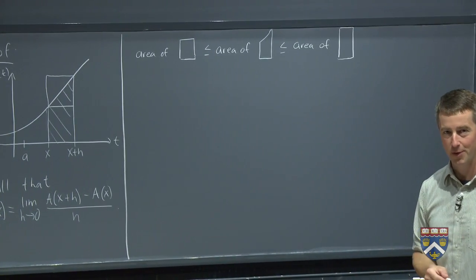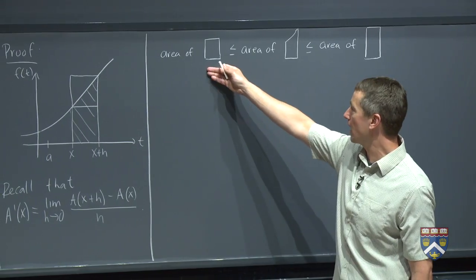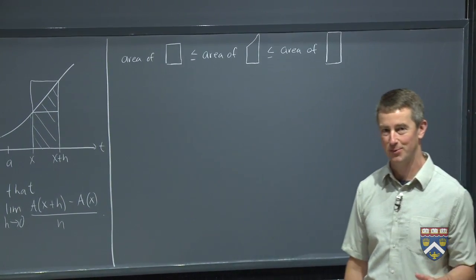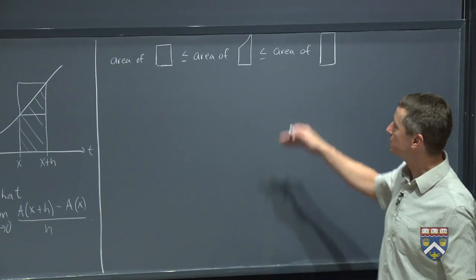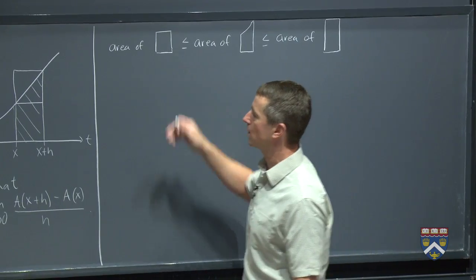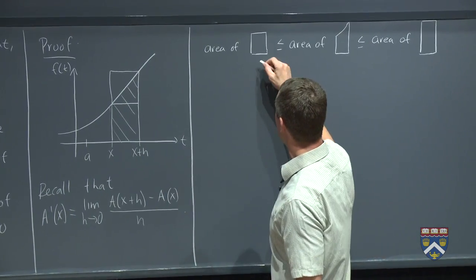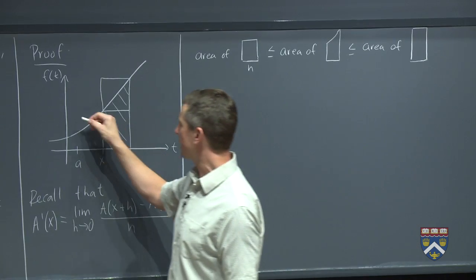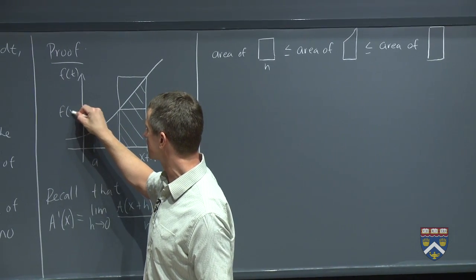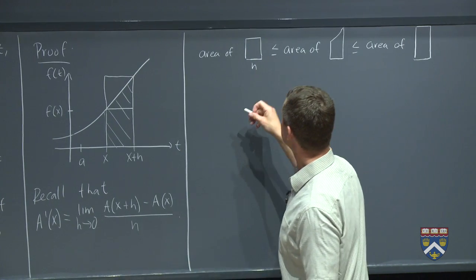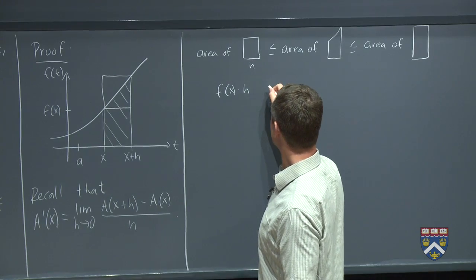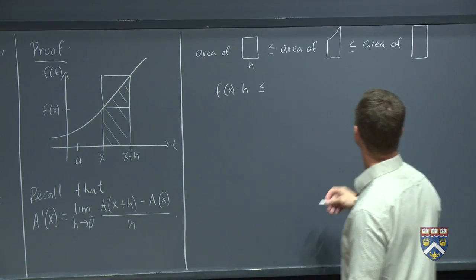Now, this might look familiar. There was another time this semester where we did one area less than or equal to another area, less than or equal to another area. So if this looks familiar, good for you, because we're going to use exactly the same technique that we did back then. So what is this smaller rectangle? How wide is it? It's h units wide. And how tall is it? It's whatever the y value is here, which is f of x. So the area of this small rectangle is simply f of x times h.